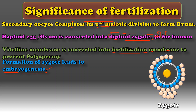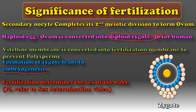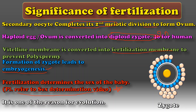Depending on the type of sperm fusing with the ovum, the sex of the individual is determined. So fertilization determines the sex of the baby. As fertilization involves intermixing of chromosomes, it creates variation and ultimately helps in evolution.